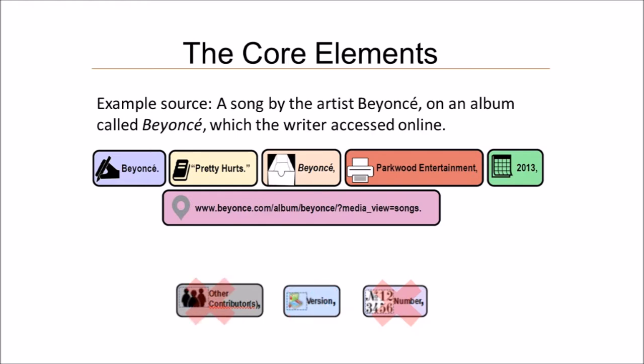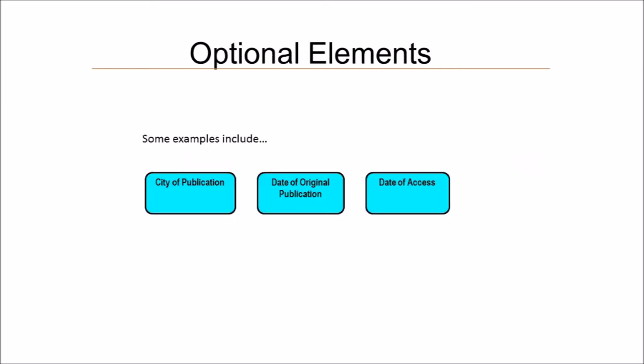What if you listened to a version of the song that the reader wouldn't expect — maybe an obscure remix? Then you'd want to let the reader know the version. Or what if you listened to the song on a CD? Then the number of the song would help someone find it on the CD, so you'd include the number. You might even find that for a few different sources, you'd need to include some elements that aren't on this list. The bottom line is that you need to think about your source and the reader and use your best judgment.